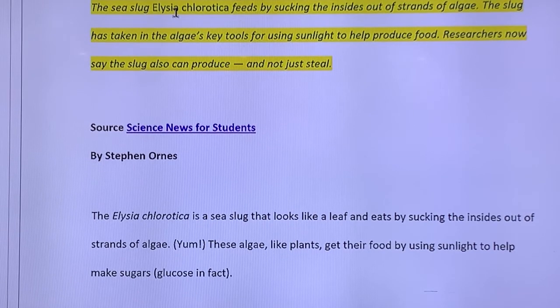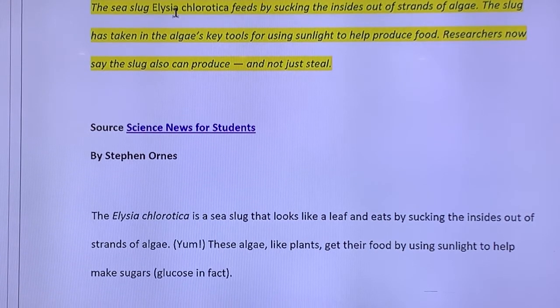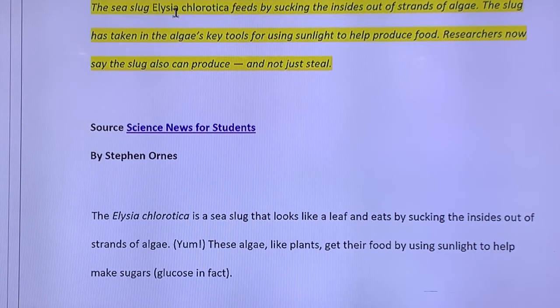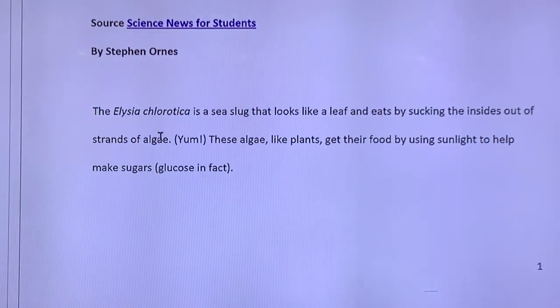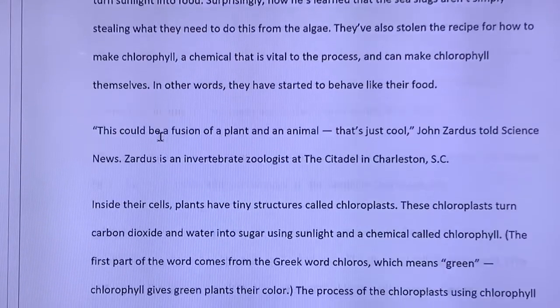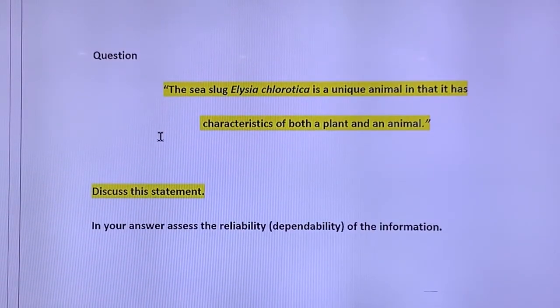So it says the sea slug, scientific name, Elysia chlorotica feeds by sucking the insides out of strands of algae. The slug has taken in the algae's key tool for using sunlight to help produce food. Researchers now say the slug can produce and not just steal. So straight away with this, the interesting thing that I can see a link to is I've just gone on and on to you about the fact that animals can't create their own food. But what's this article saying? It's saying that this sea slug has now eaten a plant and can make its own food like the plant can. So straight away, you're talking about digestion and cells. So photosynthesis chloroplasts.